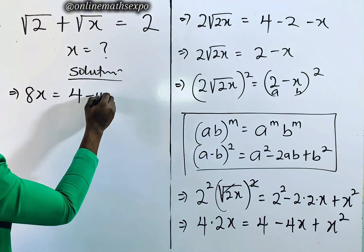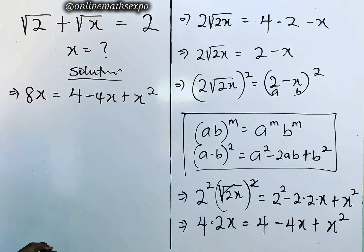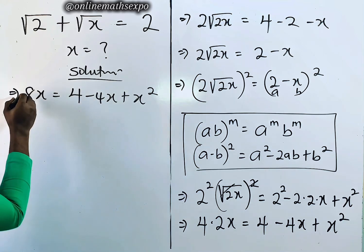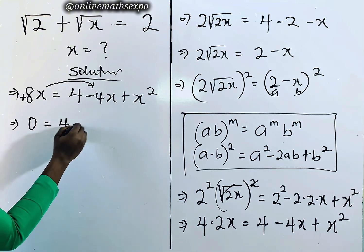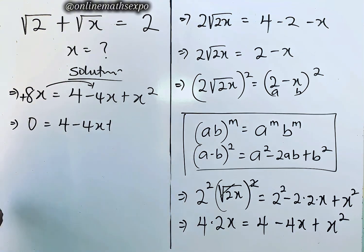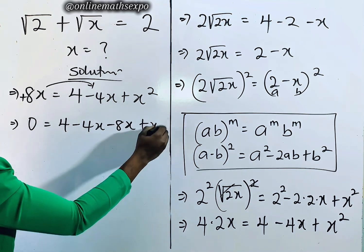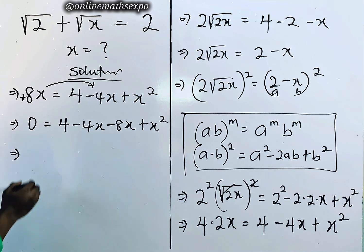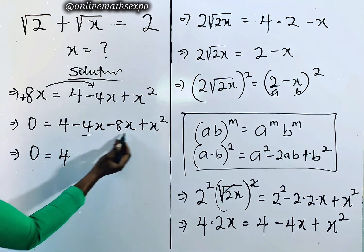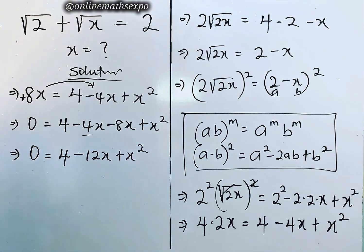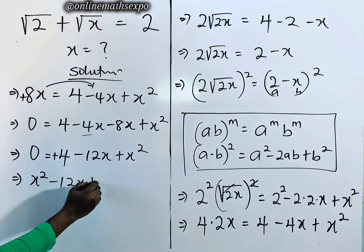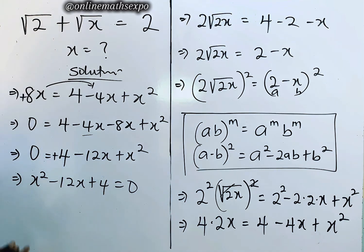We observe that the highest power of x is squared, leading to a quadratic equation. Taking everything to the right side: 0 = 4 − 4x − 8x + x², which simplifies to 0 = x² − 12x + 4. So our quadratic equation is x² − 12x + 4 = 0.